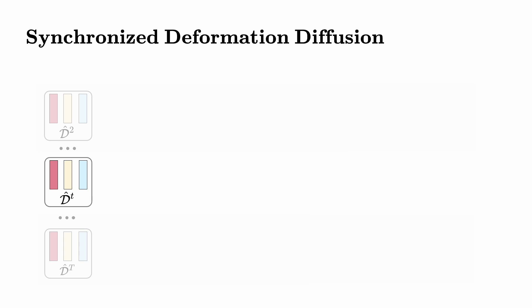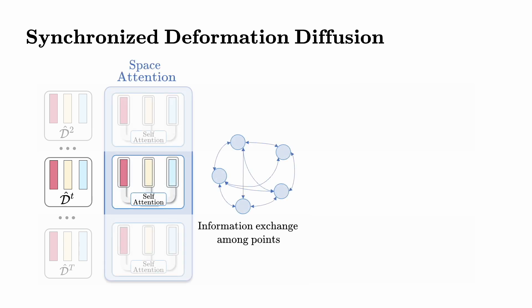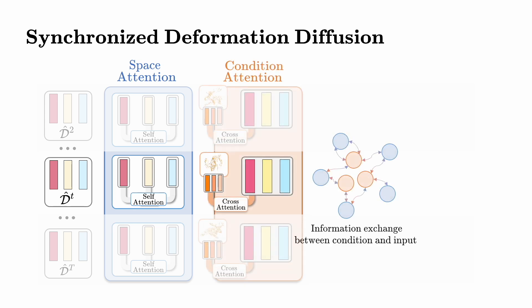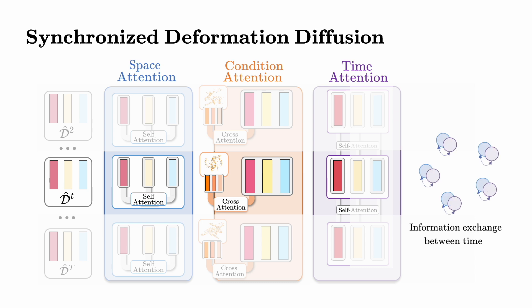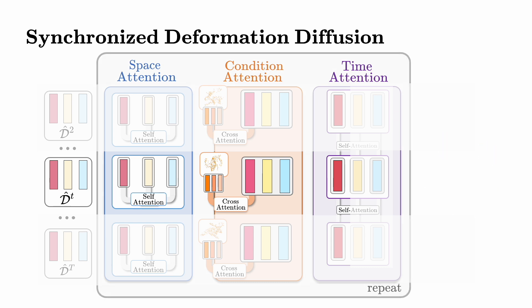Given noisy deformation vector sets, we first use a spatial self-attention layer to aggregate latent features across different spatial locations within each frame, exploring spatial contexts. Next, we apply cross-attention to inject conditional information between noisy deformation codes. Lastly, a time self-attention layer aggregates latent codes from the same positions across different frames. By repeating this process, we obtain the final denoised latent sets.